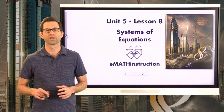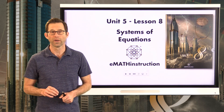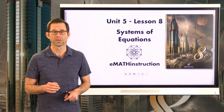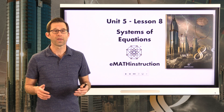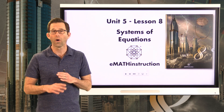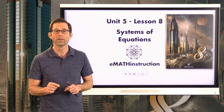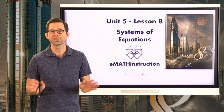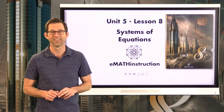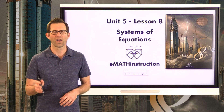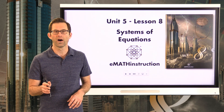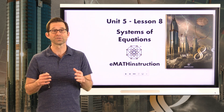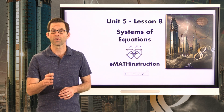Today we saw for the first time what's known as a system of equations. For us, a system is a collection of two lines — though you could have three, four, or five lines as long as they all intersect at a single point. In future courses, you won't just have lines; you'll have parabolas and other types of curves combined into systems, solved by finding their intersection points.